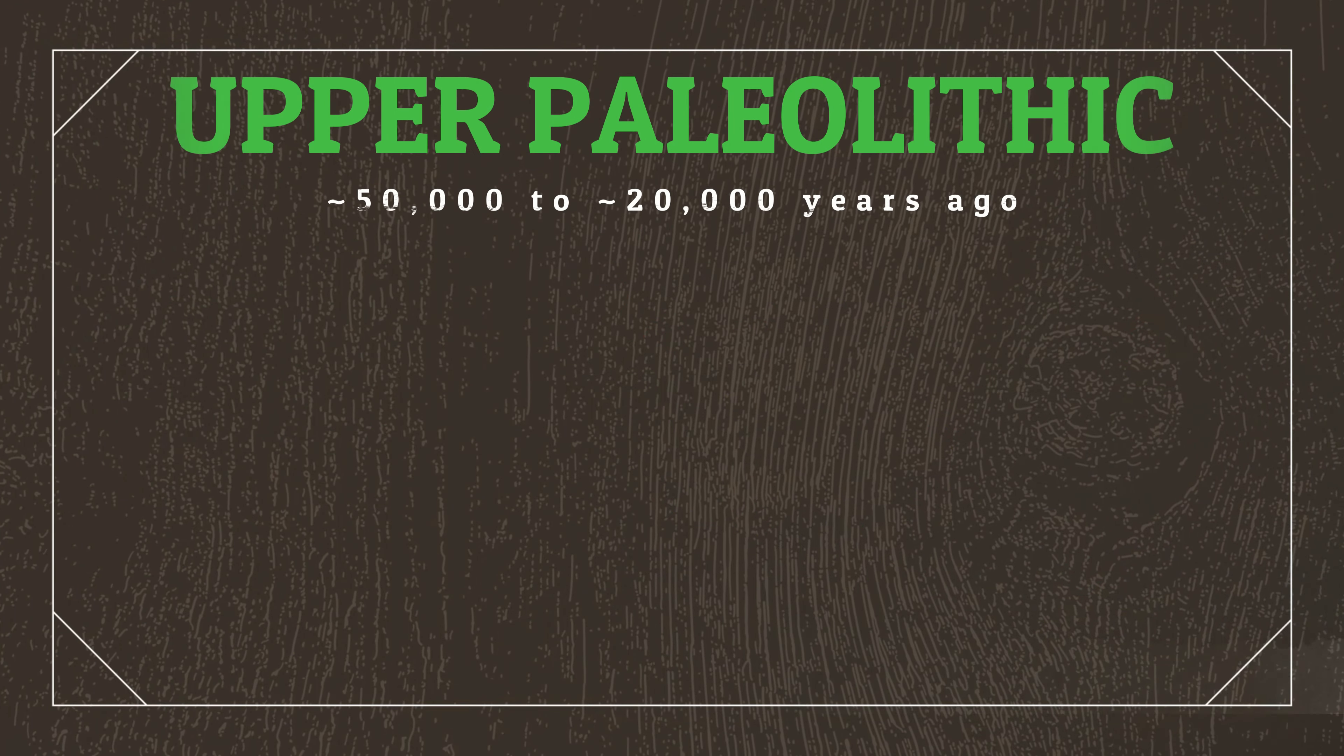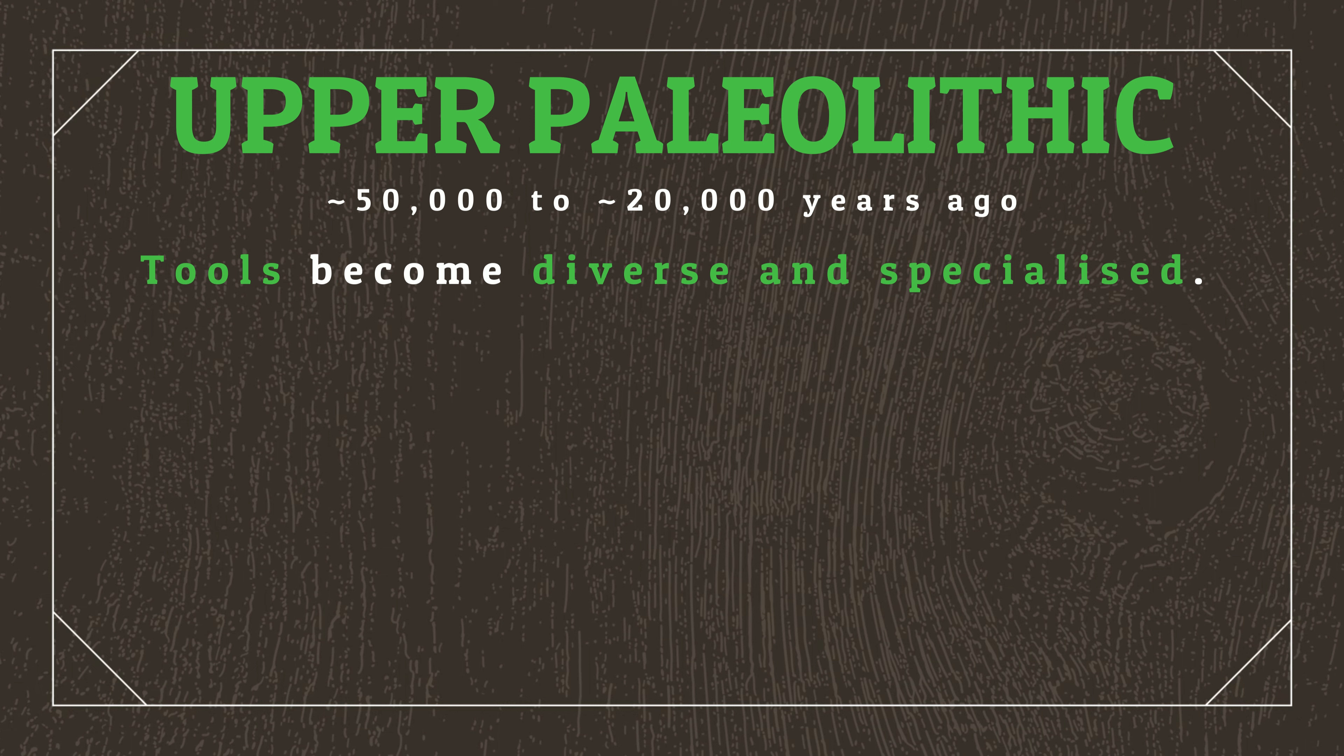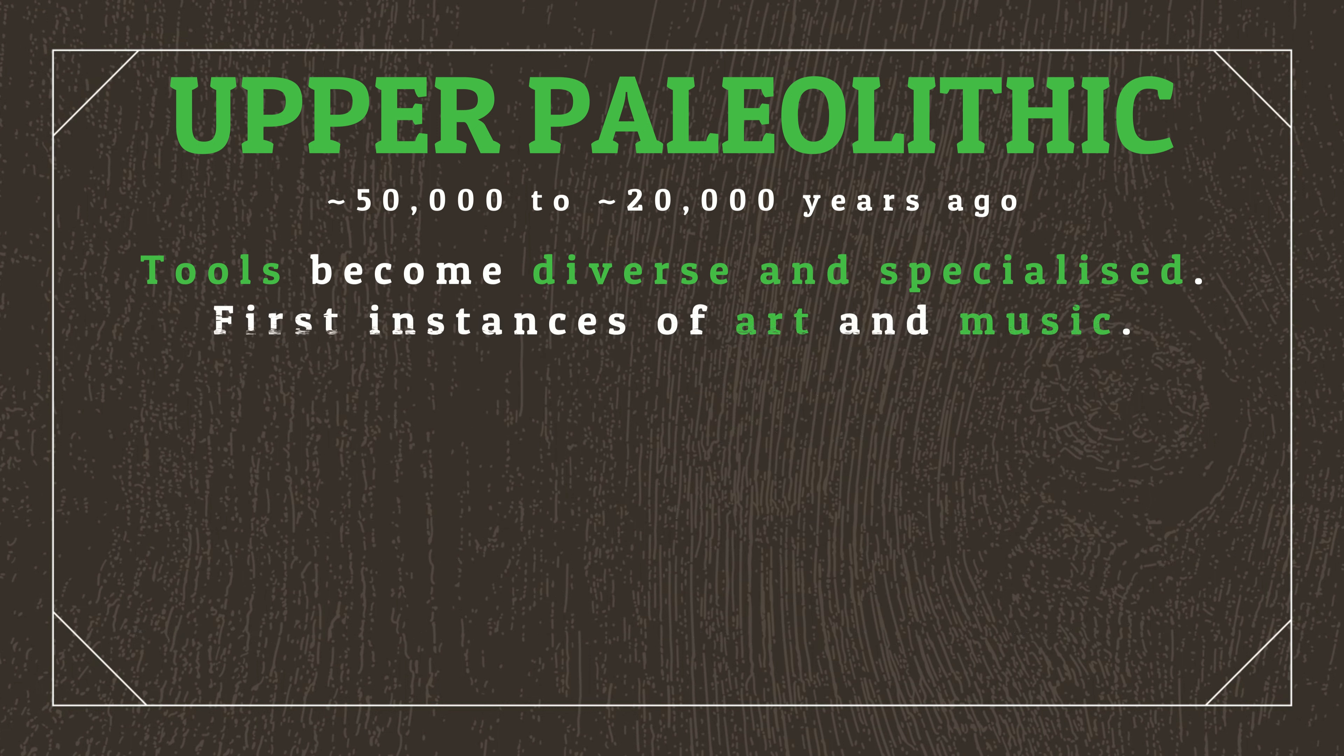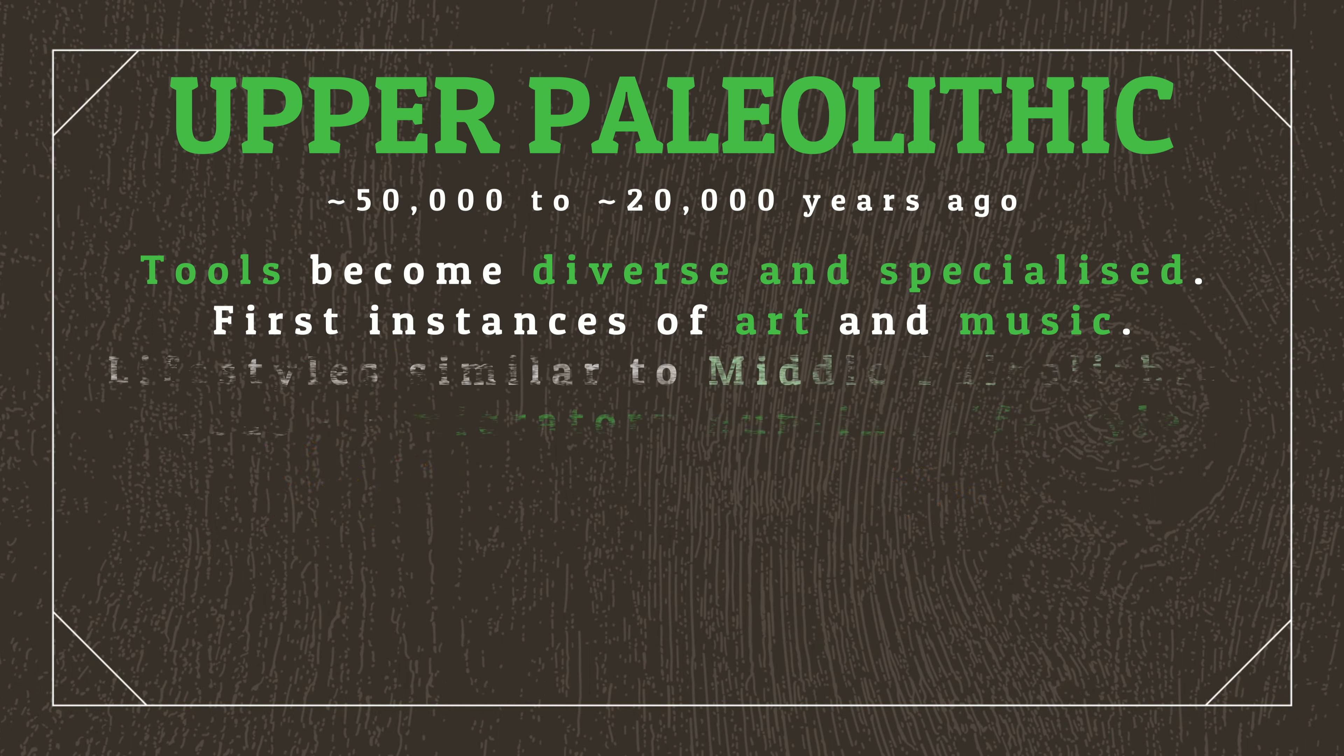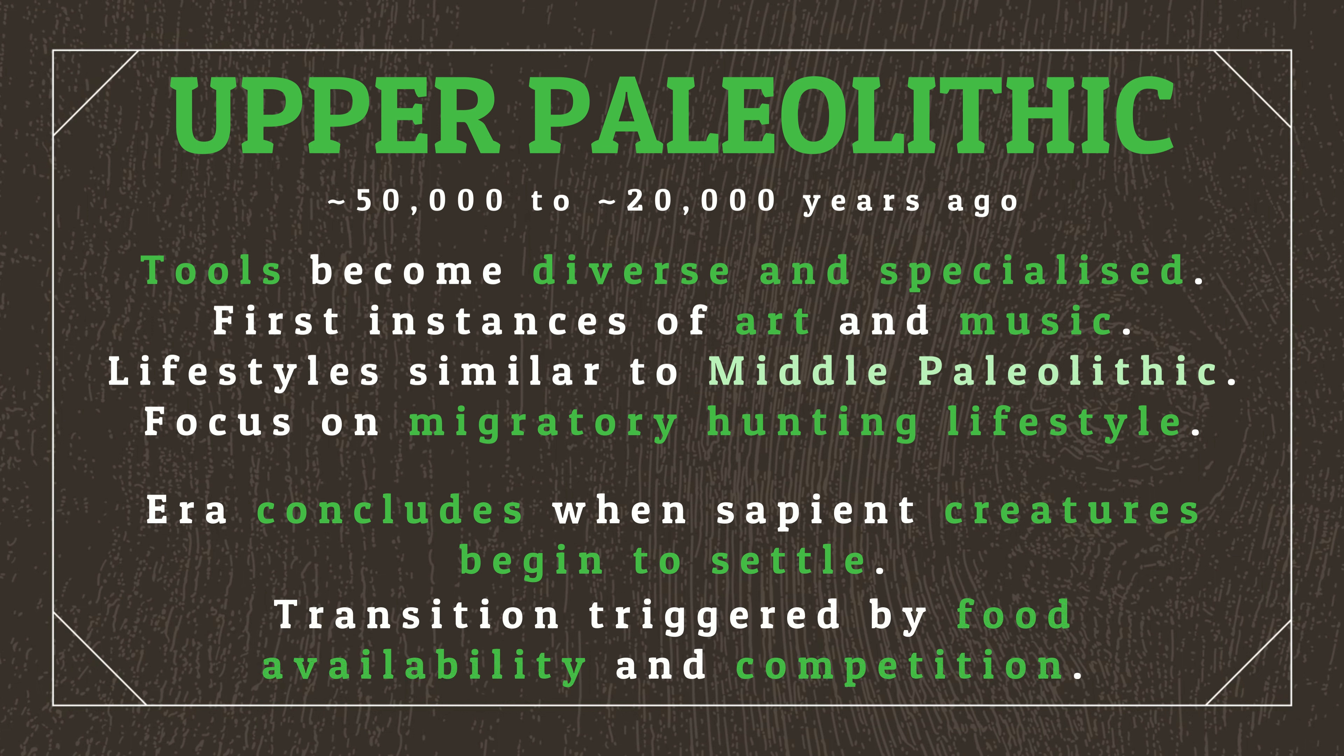The Paleolithic then finishes off with the Upper Paleolithic, where tools start to become far more diverse and specialized to assist with specific tasks, such as hunting tools like spears and darts, fishing tools like hooks, nets and harpoons, and logistical tools like rope and threading needles. We also begin to see the first instances of art in the form of paintings, as well as musical instruments like flutes, both of which lead to the further development of diverse cultures. At this stage, however, lifestyles for sapient creatures are very similar to those in the Middle Paleolithic, with a heavy focus on a migratory hunting lifestyle. The Paleolithic draws to a close when sapient creatures start moving away from this lifestyle, beginning to favor more settled communities, triggered by greater food availability and the pressure of competition from other cultures.